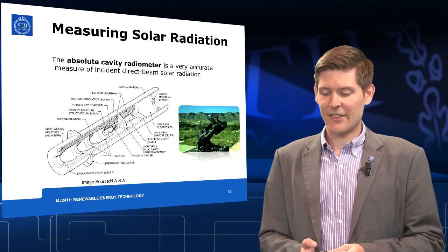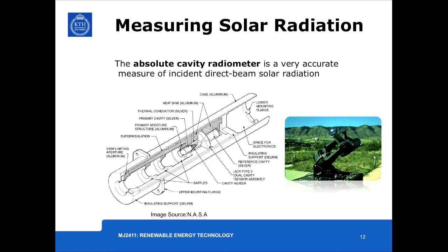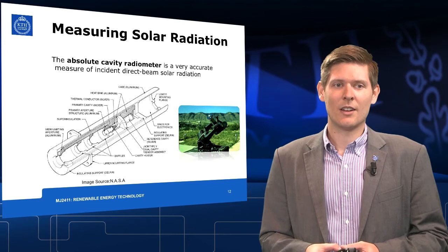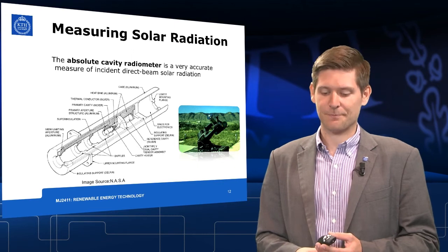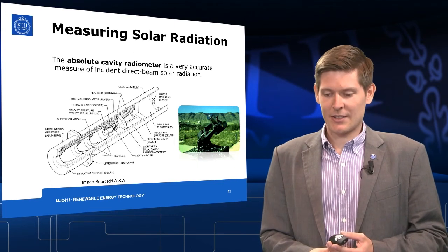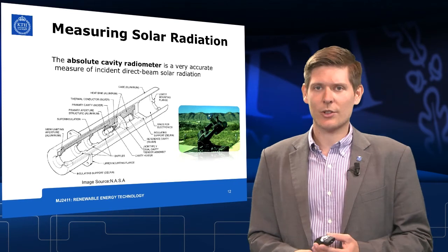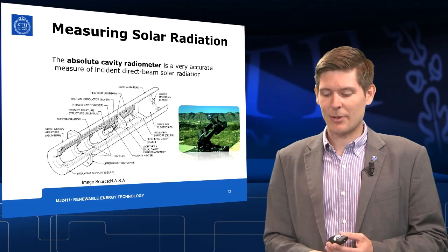The absolute cavity radiometer is a very accurate measurement device which is also able to measure the direct beam radiation. In the device, an electric current is used to keep the temperature within the cavity at a constant level. Depending on the solar radiation incident, more or less electricity is needed to keep the temperature at a constant level. The electricity is then proportional to the incident radiation. These devices are usually used in order to calibrate pyranometers or pyheliometers.